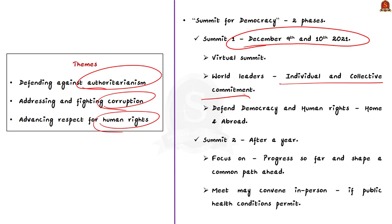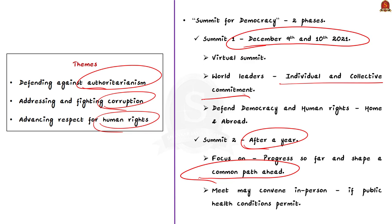The second phase of the summit will be held after one year and will also be hosted by President Joe Biden. The second phase will focus on the progress made so far and the common path ahead — it will assess progress made on the commitments. So the first phase takes individual and collective commitments of global leaders, while the second phase assesses progress on those commitments.